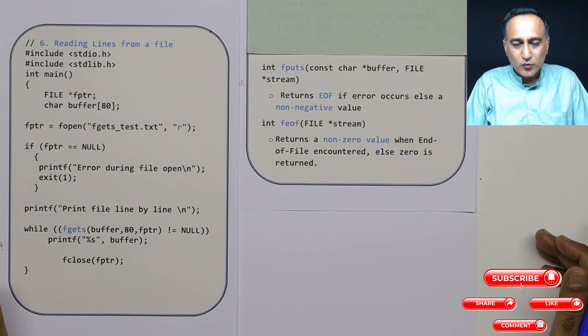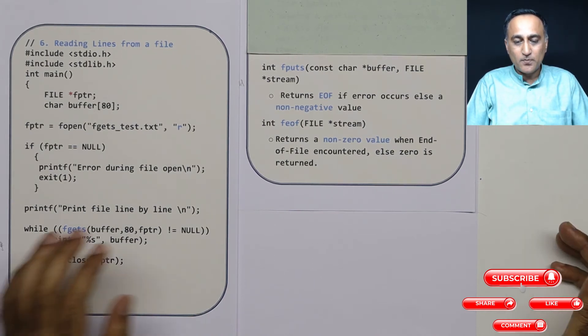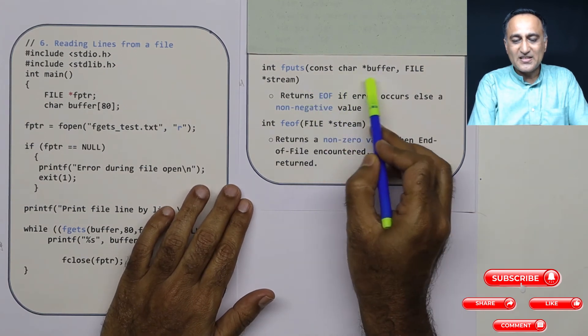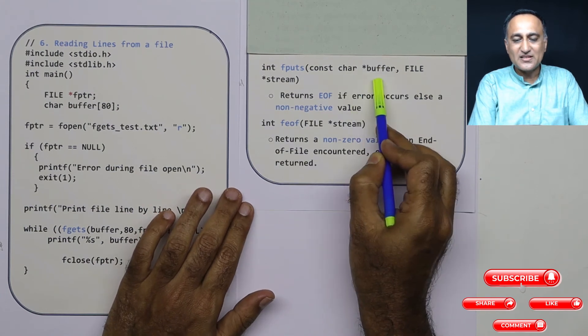Now I had not shown you the syntax of fputs in the previous video. So take a look at fputs syntax. The first thing indicates from where the data is going to be input or read. So that is the buffer. So this is the source of input.